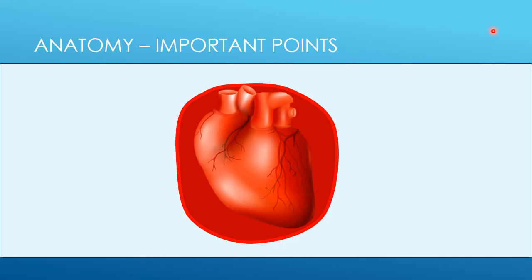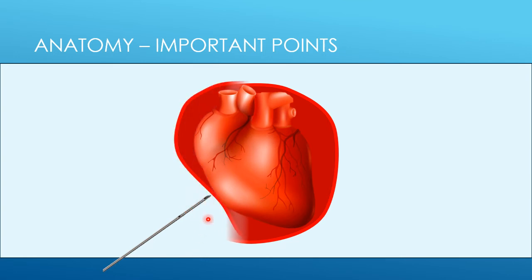Then you'll reach the pericardium, which is a tough fibrous sac. It can be very thickened, hardened, or even calcified in someone who has had a chronic pericardial effusion. Even in a normal healthy person, it's a relatively tough fibrous sac. If your needle is approaching it directly, there is potential for the needle tip to push the pericardial sac up against the heart, causing the fluid to dissipate to other parts of the pericardium.